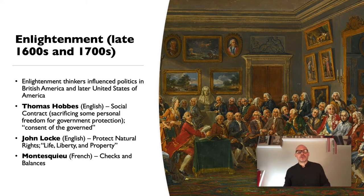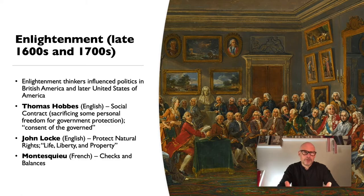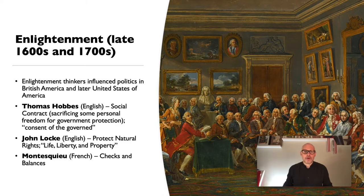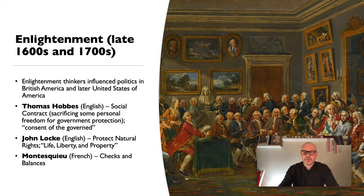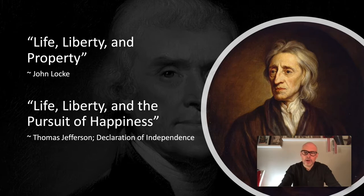Montesquieu, a French thinker, talked about checks and balances — the executive, legislative, and judiciary branches, so that if one gets too powerful, the others control it. This would be true in the British colonies as well, though some governors got a bit too powerful. The Enlightenment brought new ideas on how people should be governed. John Locke said 'life, liberty, and property' — which looks very familiar to 'life, liberty, and the pursuit of happiness' in Thomas Jefferson's Declaration of Independence, 1776. You can see the direct influence on what would become the United States.